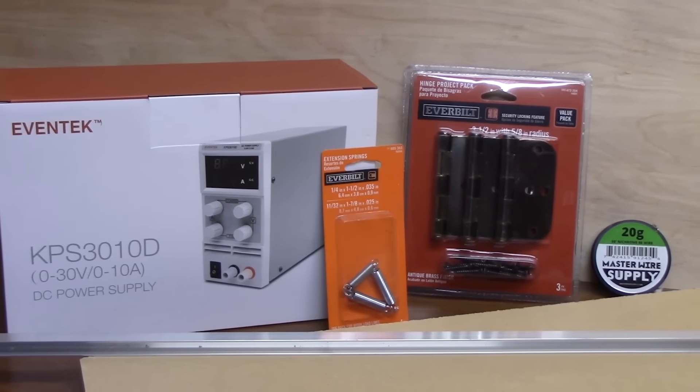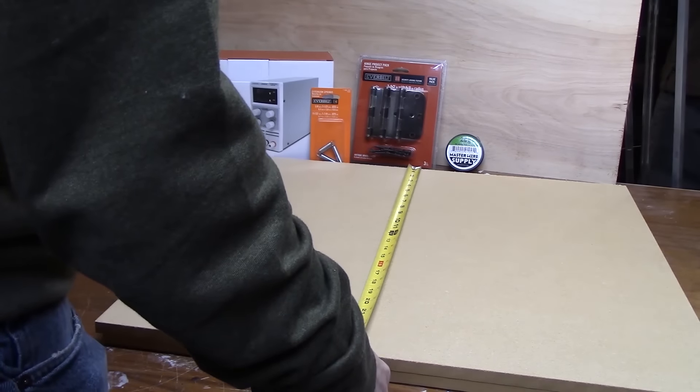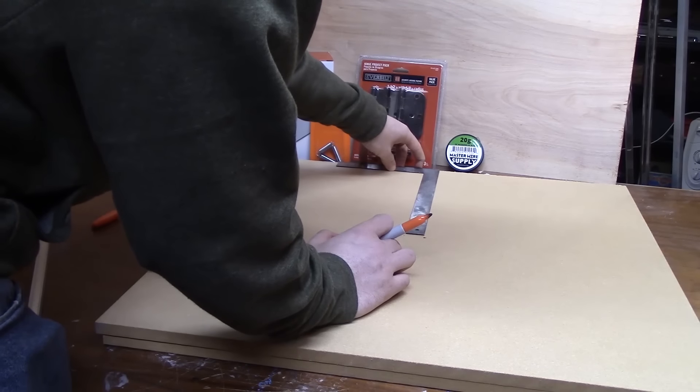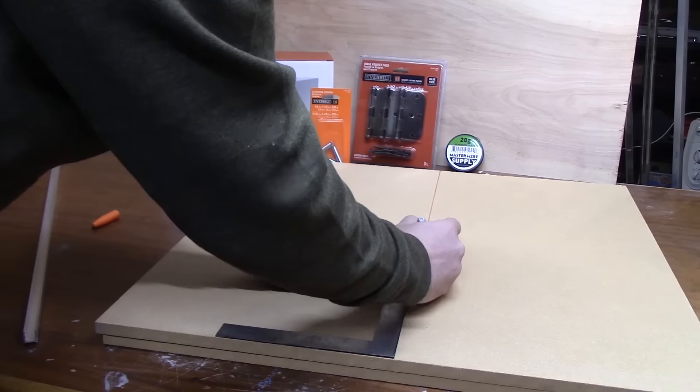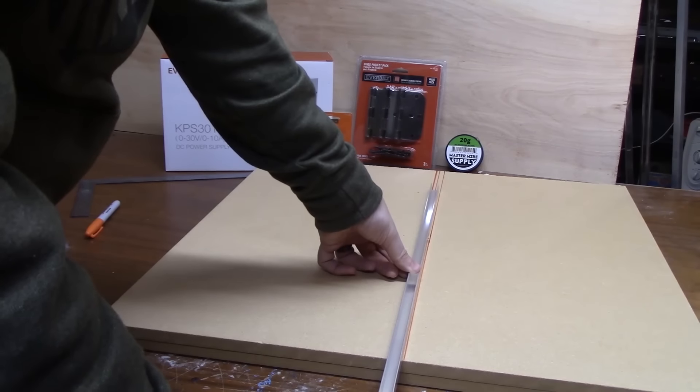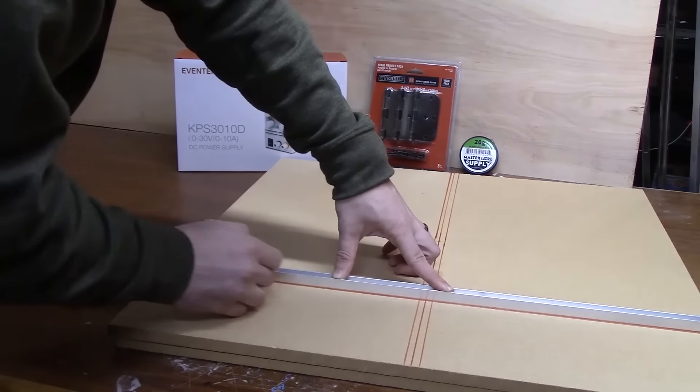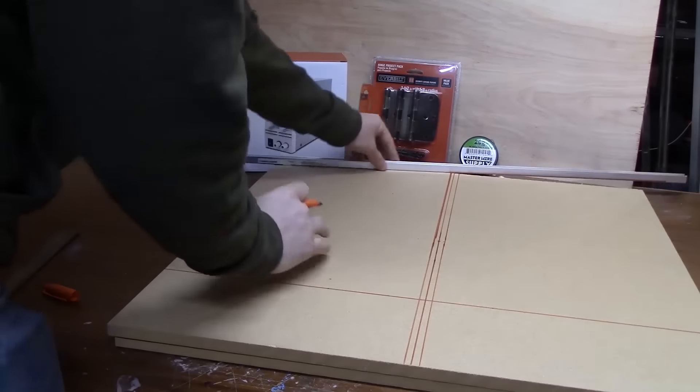You don't need a whole ton of stuff to make an acrylic bender. The power supply is the most expensive part, and then all the other things you can basically just get from Amazon or a local hardware store. Everything I use in this video will be listed in the description, so if you see me using a certain tool or piece of material and you don't know what it is, check the description.